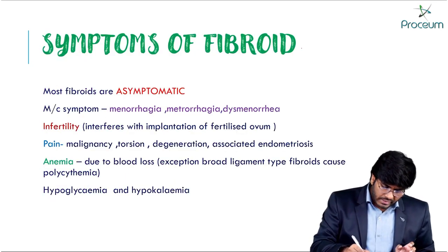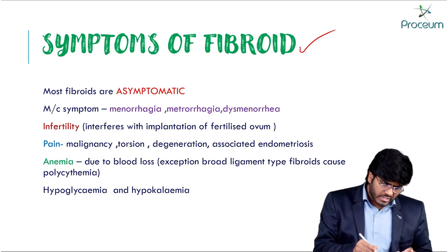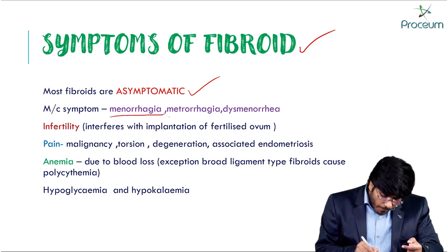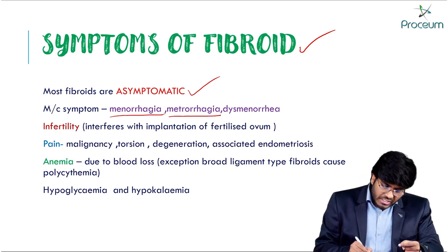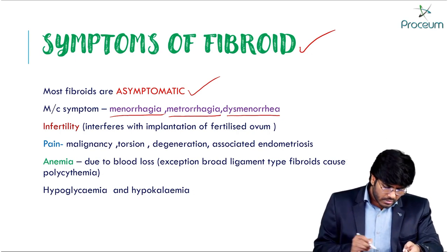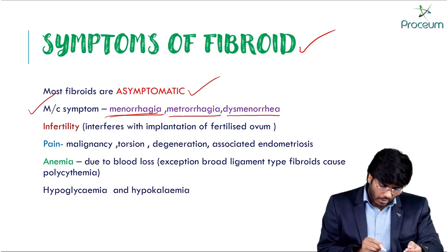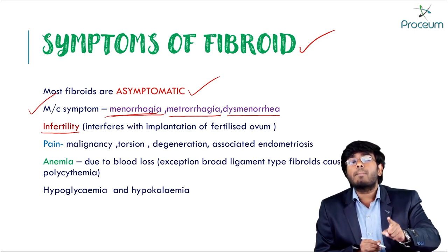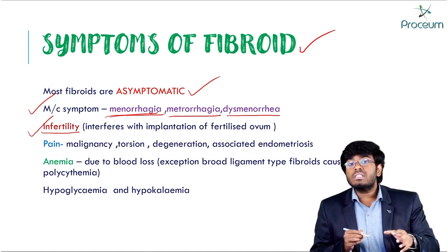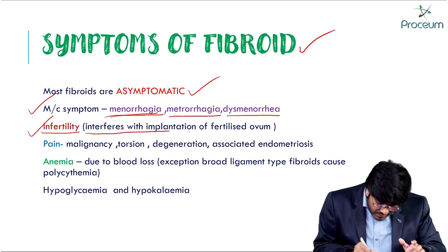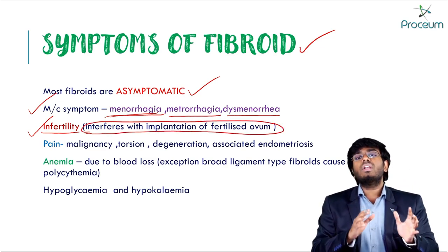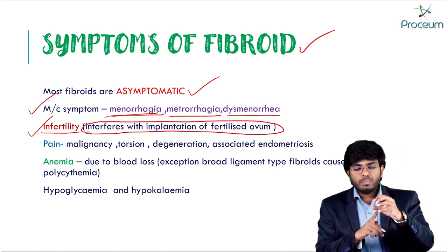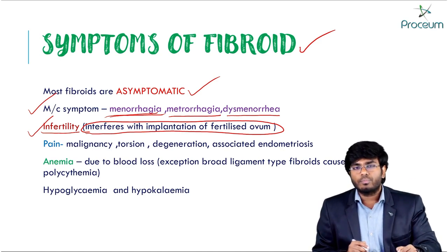The most common symptom of fibroids is menorrhagia, followed by metrorrhagia (irregular bleeding) and dysmenorrhea. Submucosal fibroids are mainly responsible for infertility — they interfere with implantation of the fertilized ovum and hinder the ascent of sperm toward the fallopian tube. Pain usually indicates a malignant change, torsion, or degeneration, not a typical uncomplicated fibroid.